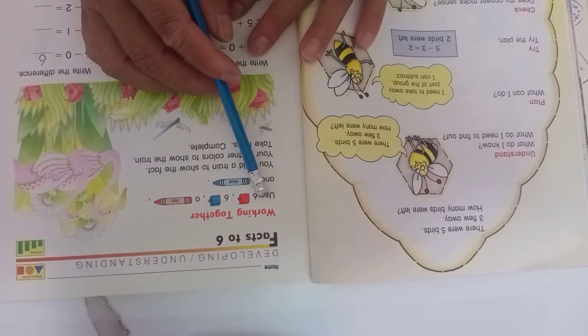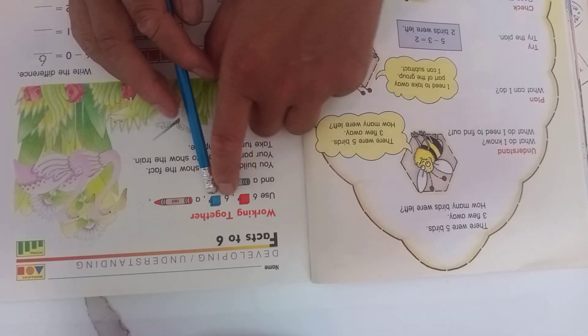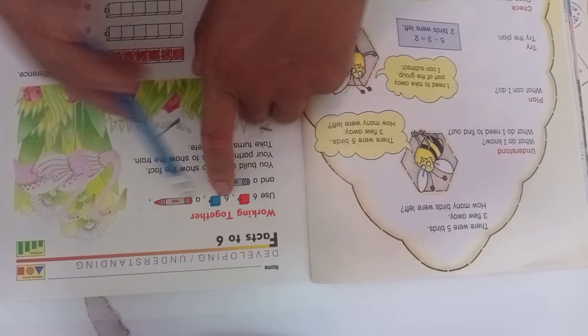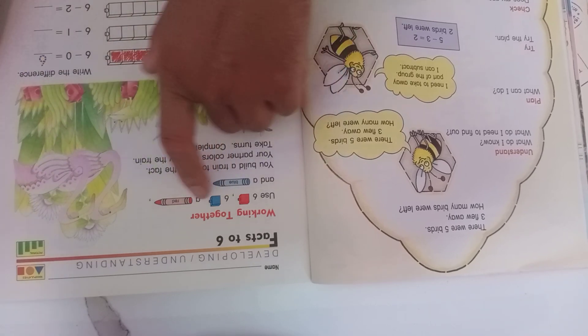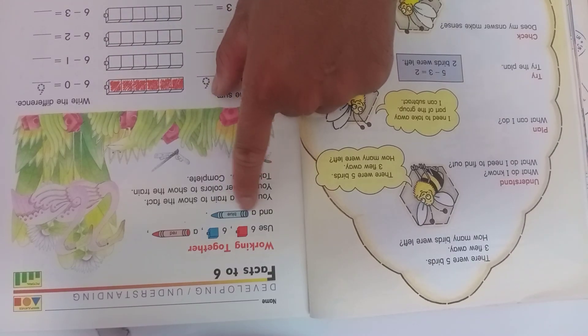Page 19. Now we're working together. Use six red and six blue groups, and a red and a blue color pencil.